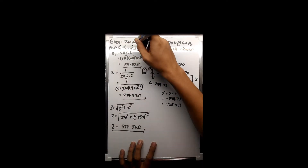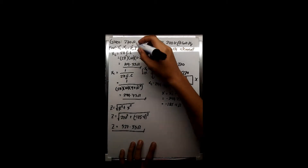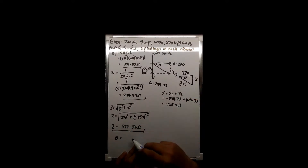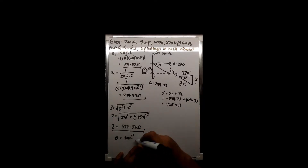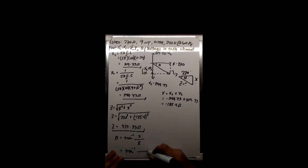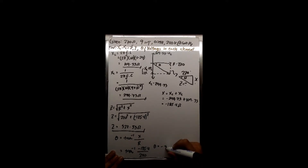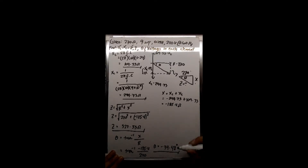Now let's find the phase angle first and then the current. Phase angle is the arctangent of the opposite over the adjacent — arctangent of X over R — which is arctangent of negative 185.4 over 270. So the phase angle theta equals negative 34.48 degrees.